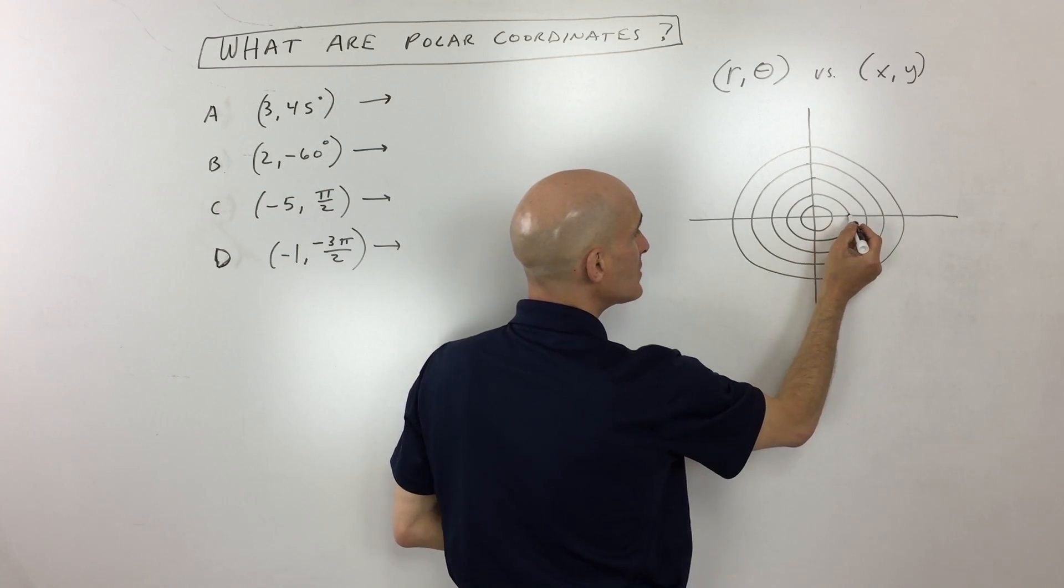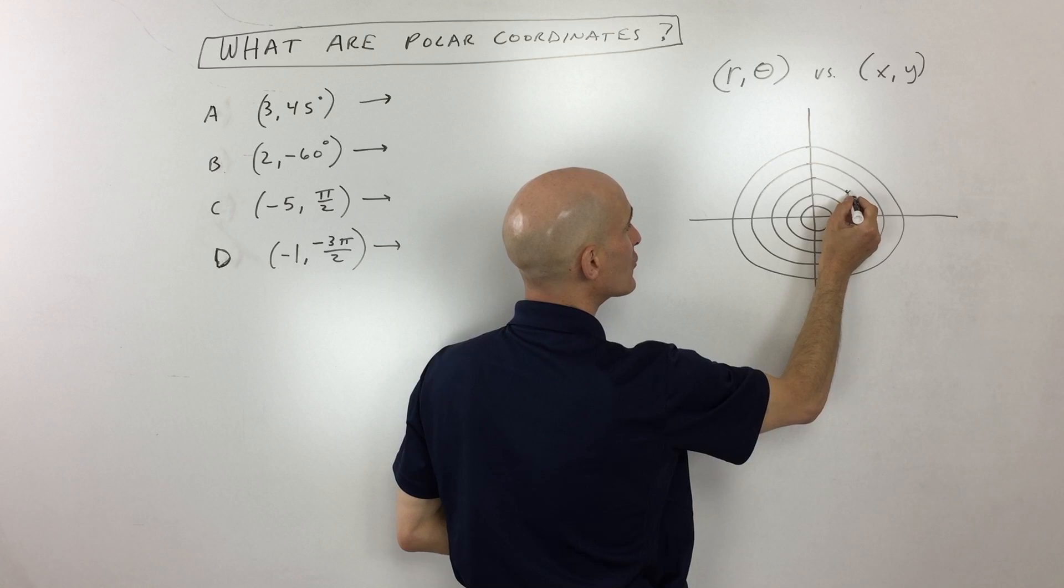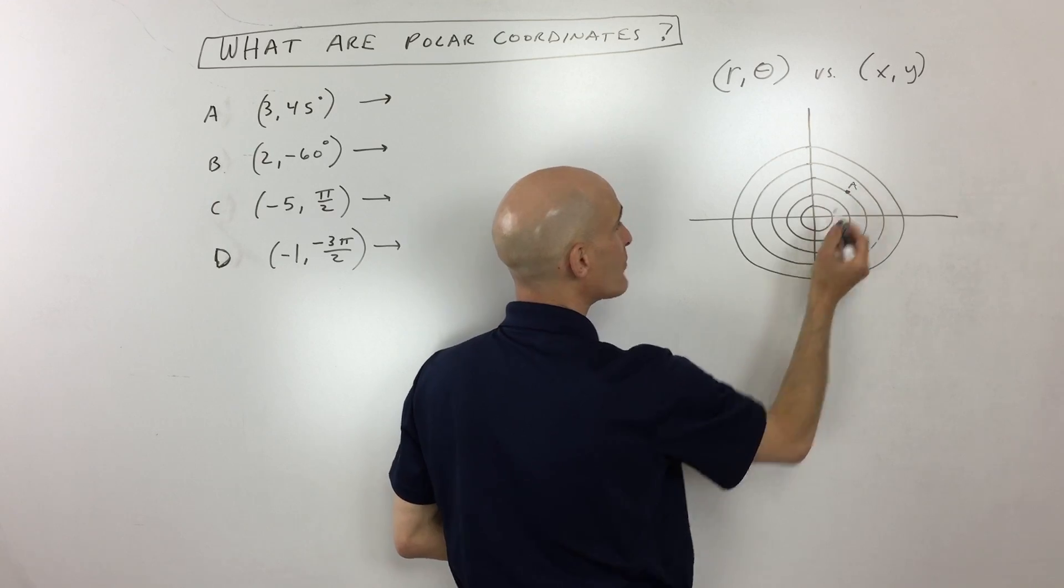It's at (3, 45°). So this means a circle of radius three and an angle of 45 degrees. So what I'm going to do is I'm going to go over here one, two, three, and then I'm going to rotate 45 degrees right there. That's point A.